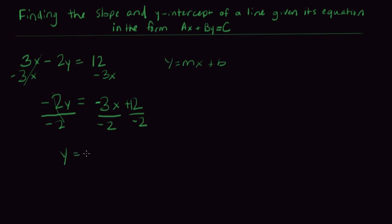Over here we just get y and then over here we have negative 3 over negative 2 is just 3 over 2x plus, and then this is going to be 12 divided by negative 2 so minus 6 is going to be our answer.